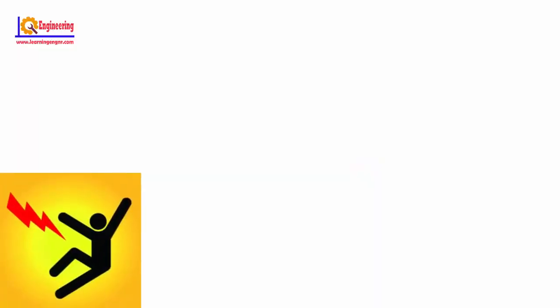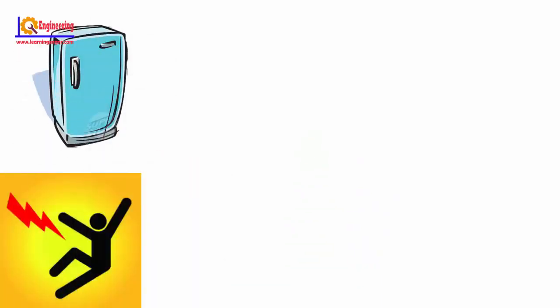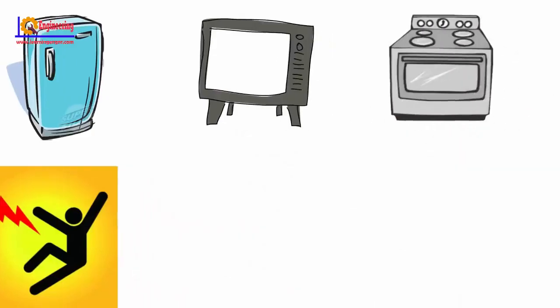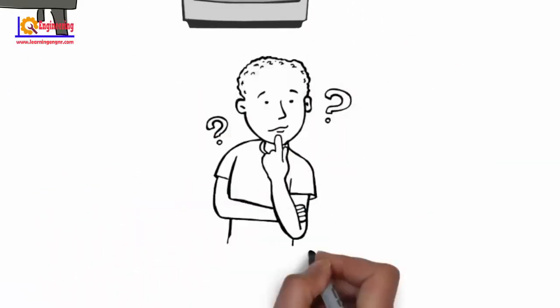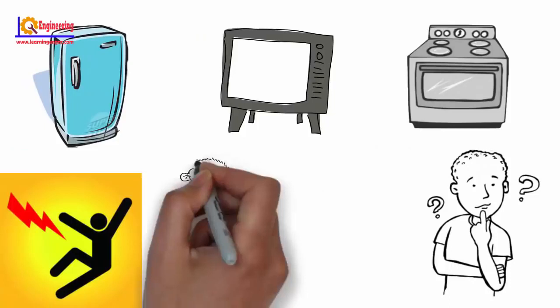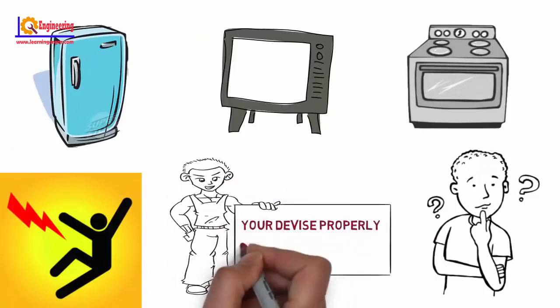Have you ever been shocked when you touched an electrical home appliance such as a fridge, TV, or oven? Well, then you already know something about the effects of electricity. You know what happened and why: because your device was not properly connected to earthing.